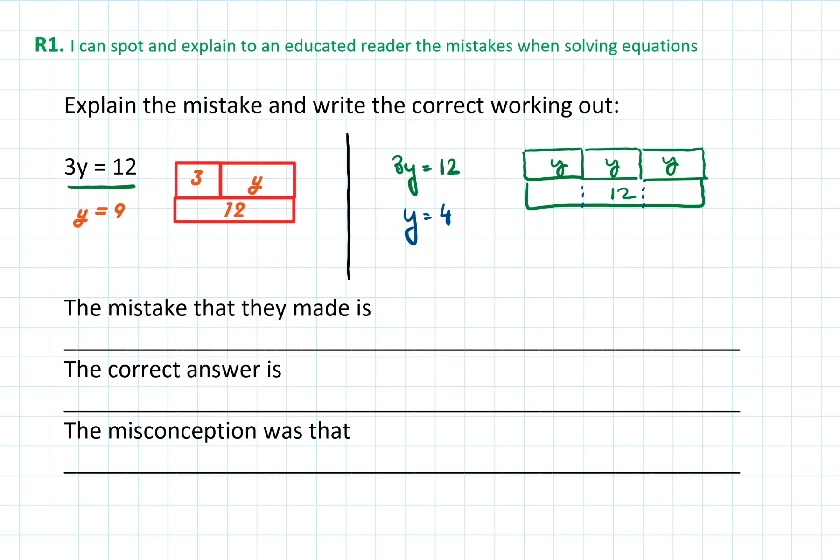So now, if we look at the incorrect solution, we can see that the mistake was where they drew the bar model incorrectly. Instead of drawing it as 3 lots of y, they drew it as 3 and y.